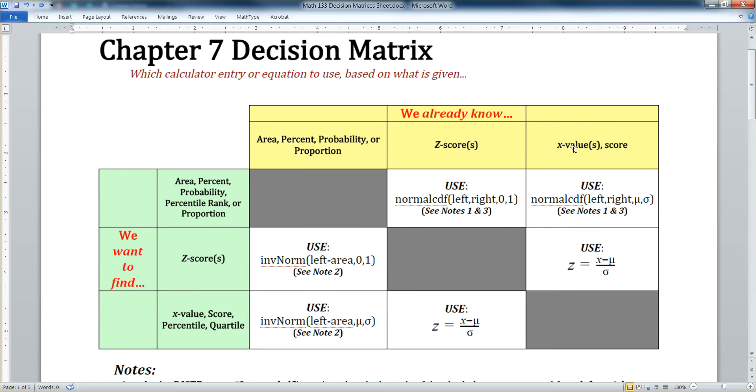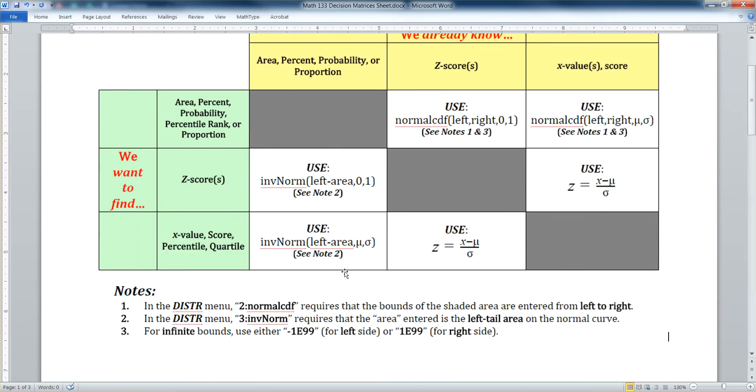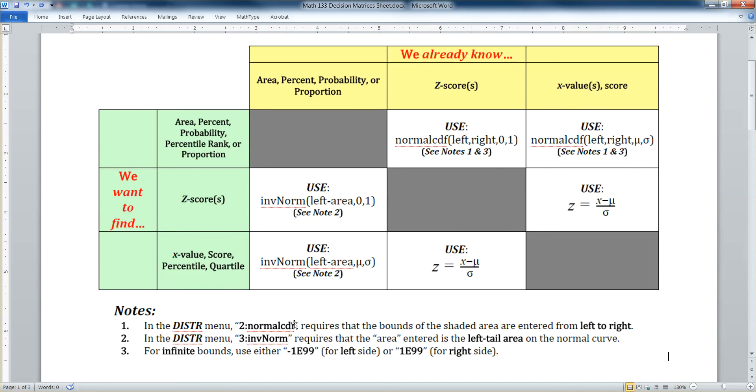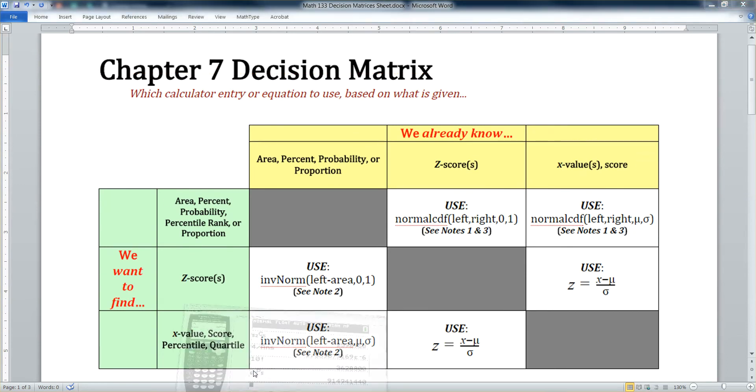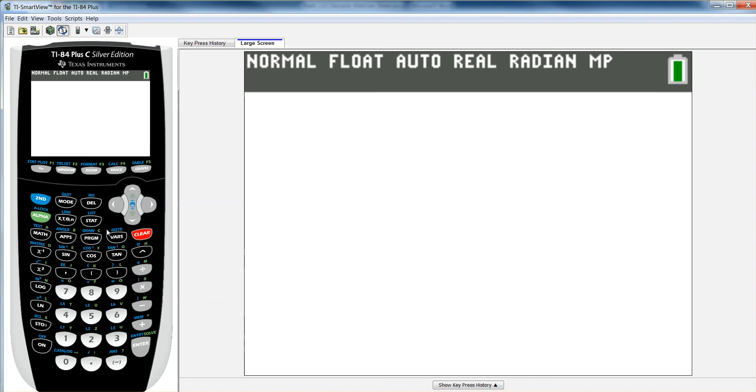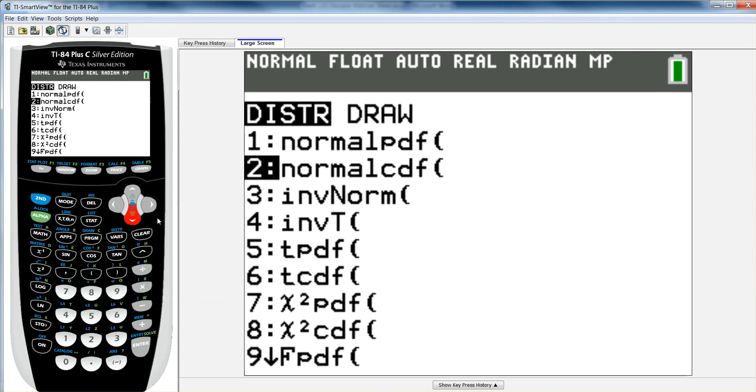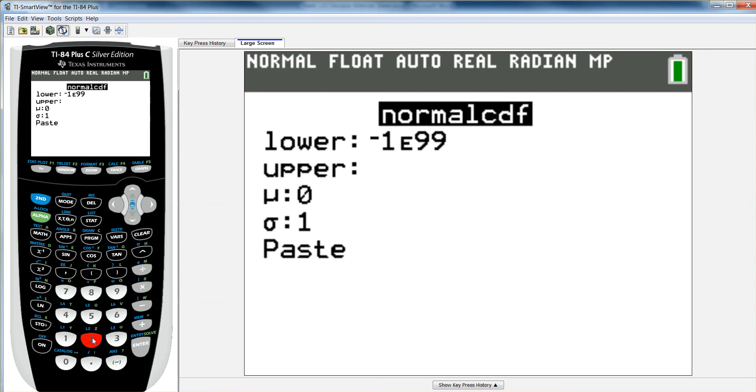So we know x values. We want probability. So we're in the top right corner. It says use normal cdf left comma right comma mu comma sigma. See notes one and three. Well we don't have areas without bounds so we don't have to worry too much about that. Normal cdf is in the distribution menu. So that's what we're going to look at. So let me grab a calculator. Clear all this out. Distribution is above the VARS button. V-A-R-S which stands for variables. So you hit second, distribution, and we always want for area under the curve. We want normal cdf. So number two.